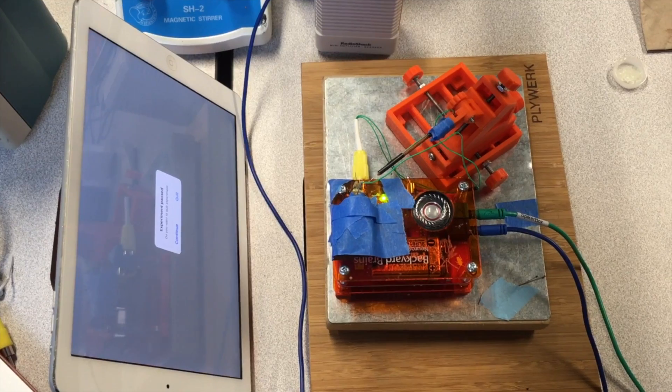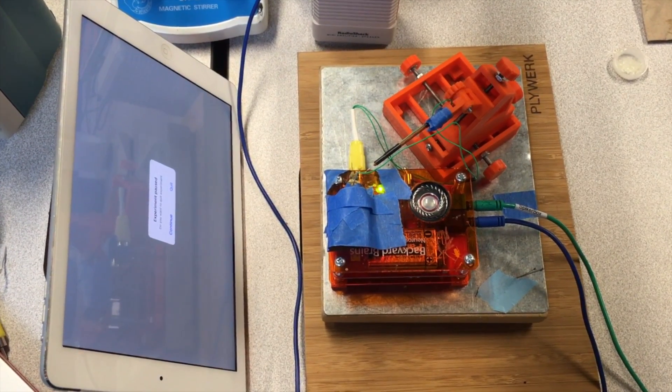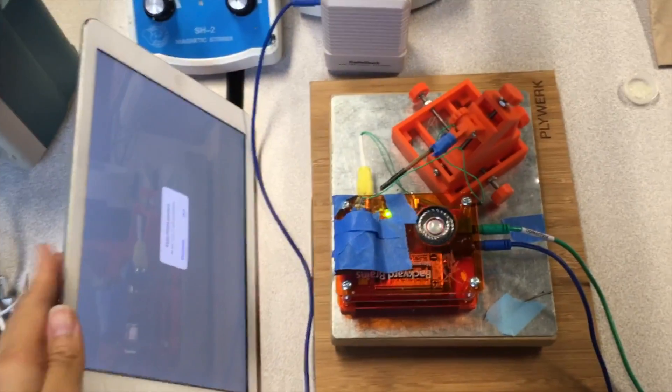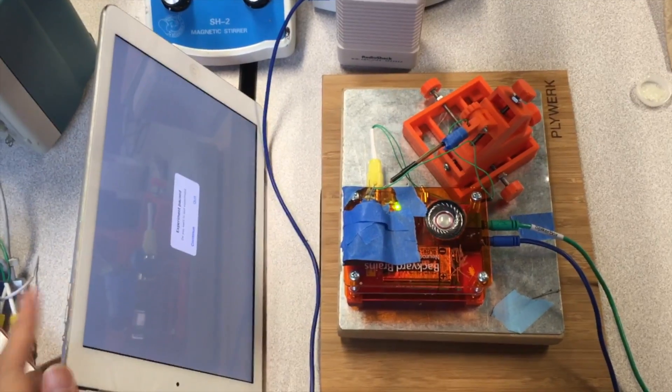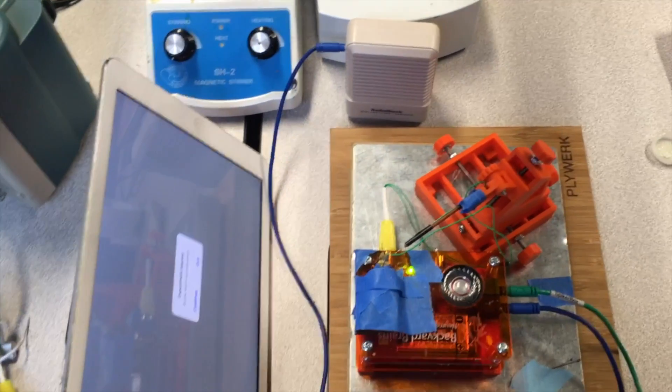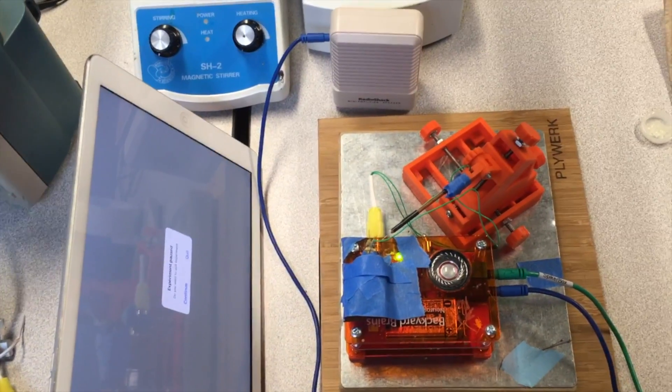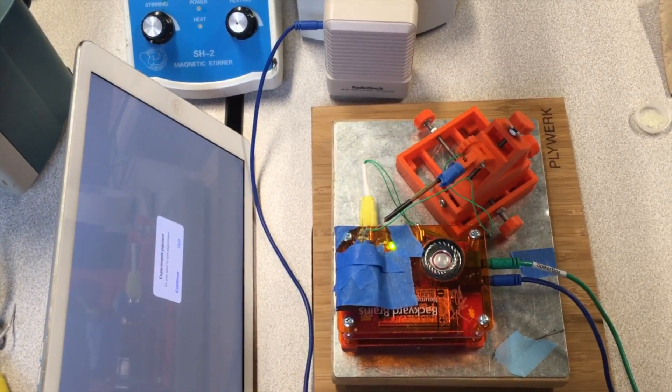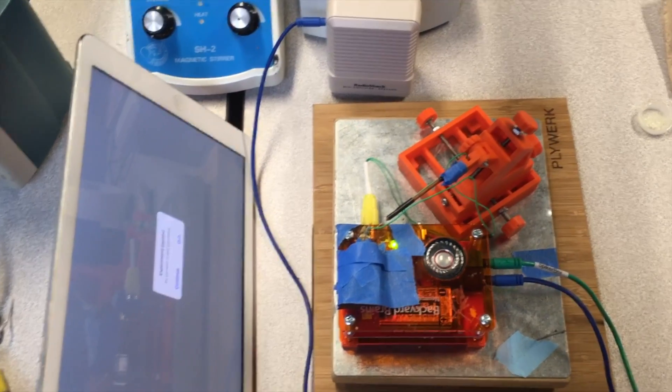Now that the prep is done, we can begin the experiment. I'm using the iPad Spike Recorder app to record the DCMD activity, and we can also listen to it using the Radio Shack speaker. On the screen, there will be black balls expanding to simulate an object approaching the grasshopper's eye.